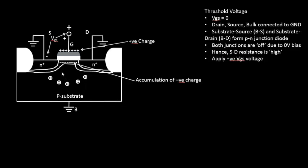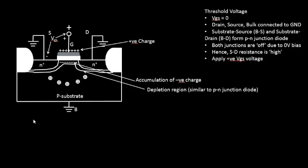This also resulted in the formation of a depletion region, very similar to what we see in the case of a PN junction diode. So most of the working of the NMOS fairly replicates the functioning of the diode.